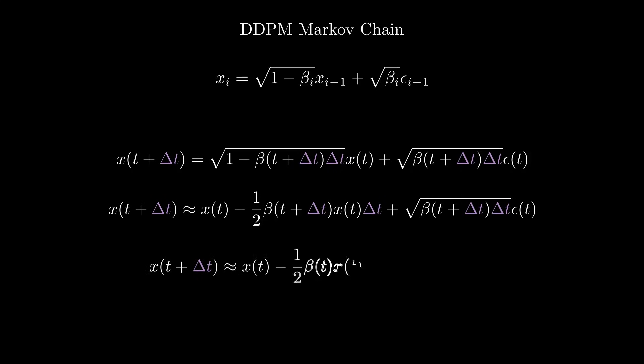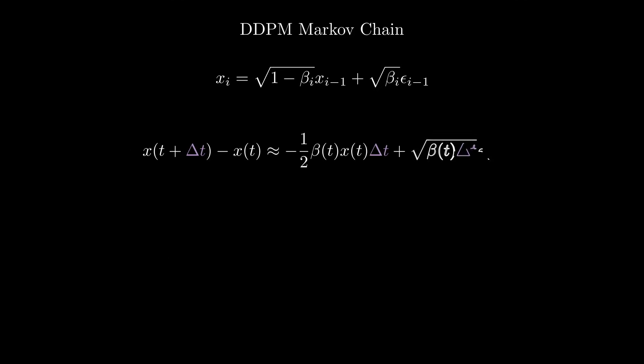Now we make a second approximation. We assume that beta at time t plus delta t is very close to beta at time t, which again is valid when delta t is small. With that we can write that the difference between x at time t plus delta t and x at time t is approximately equal to this quantity.